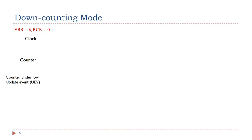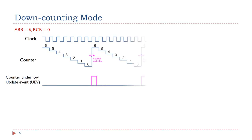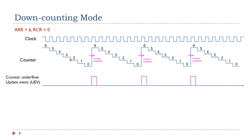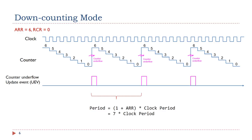In the down-counting mode, the counter counts from the auto-reload value (ARR) down to 0 with respect to the pulses of the clock signal. After the counter has reached 0, hardware automatically reloads the counter with the auto-reload value and generates two events: a counter underflow event and an update event. The period of the down-counting mode is exactly the same as the period of the up-counting mode.